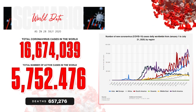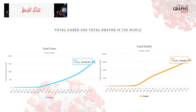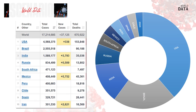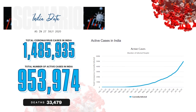Talking about the global scenario, as of 28th July 2020, the total coronavirus cases has reached a high peak of 16 million in the world. However, India, being one of the superpowers and the second most populous country in the world, has also faced the wrath of coronavirus, which now stands at the third worst-hit country with over 1.5 million cases.